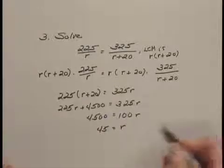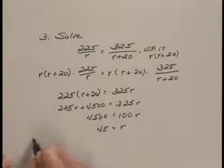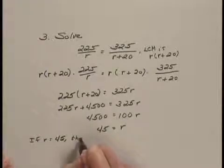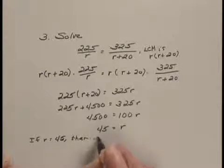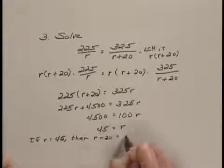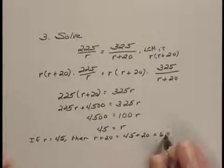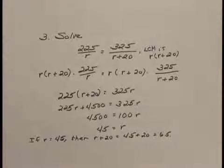So R would be Marilyn's speed. If R equals 45 then R plus 20 is 45 plus 20 or 65 and that would be Craig's speed.